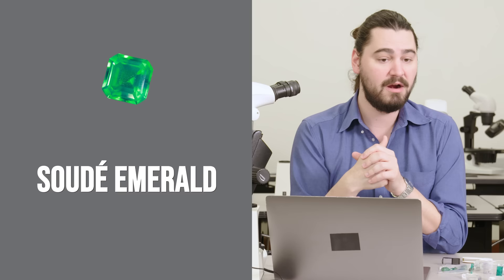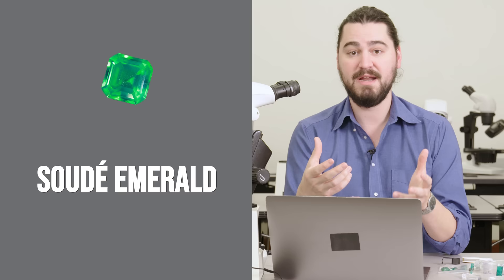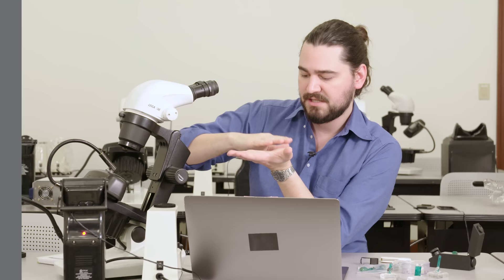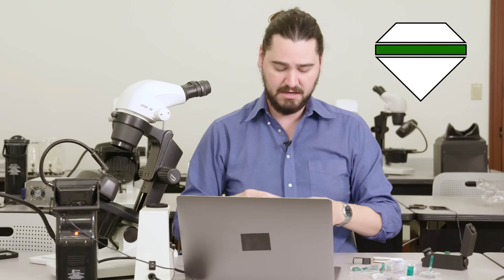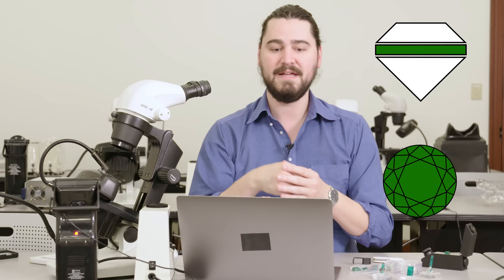So the history of the Soudé emerald goes back pretty far. Originally, the Soudé emerald was a colorless top and a colorless base, glass, colorless quartz, or even synthetic spinel. And in between the base and the top is what once used to be a green adhesive, made to look like emerald. And when viewed from the top, it makes the whole stone look green. Nowadays, they still glue a top and a bottom together, but the middle layer is actually emerald. It's just a very, very, very thin slice that sort of lends the whole stone when viewed from the top that classic green color.